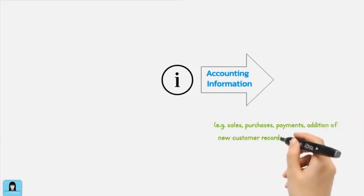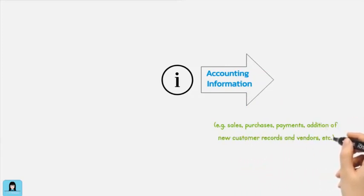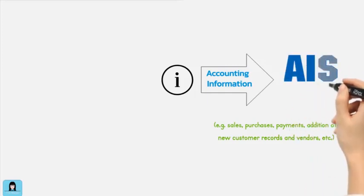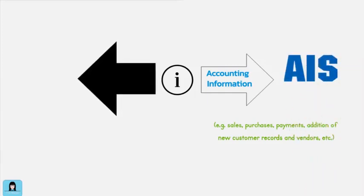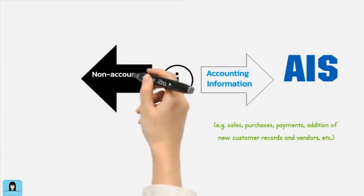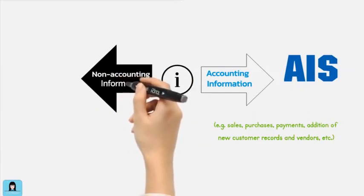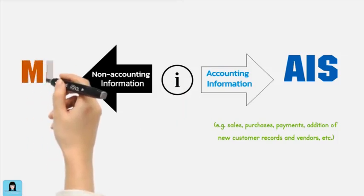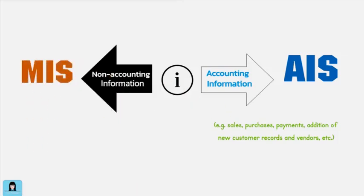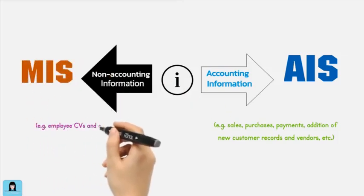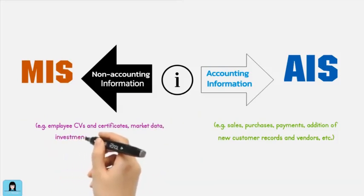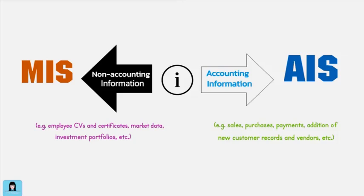However, management often requires information that goes beyond the capability of AIS. Information that is beyond AIS is processed by the Management Information System (MIS). Examples of information often processed in MIS applications are job skills of employees, market data, and market analysis.